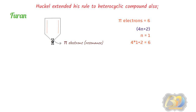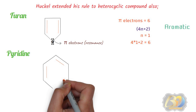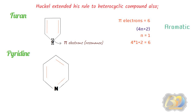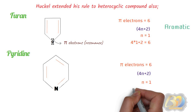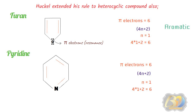The next example is pyridine. Pyridine is cyclic, planar, and all ring atoms are sp2 hybridized. It also contains alternate single and double bonds. Pyridine contains 3 pi bonds, so the number of pi electrons is 6. For n=1: 4×1+2 = 6. The number of pi electrons and the value of 4n+2 are the same. Hence, pyridine is aromatic.